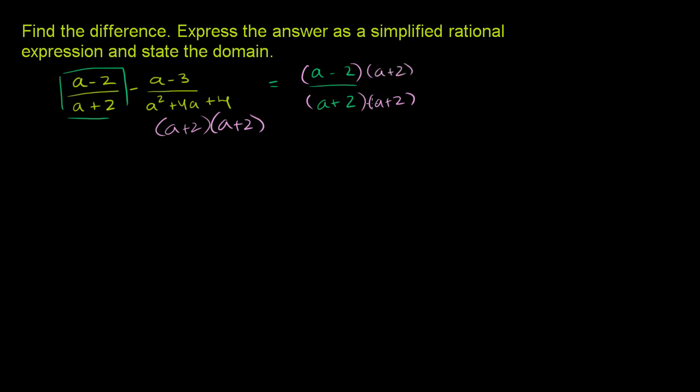And we're going to assume that a is not equal to negative 2. That would have made this undefined. So throughout this whole thing, we're going to assume that a cannot be equal to negative 2. The domain is all real numbers. a can be any real number except for negative 2.